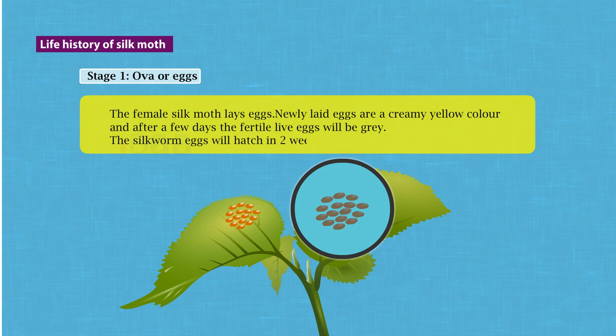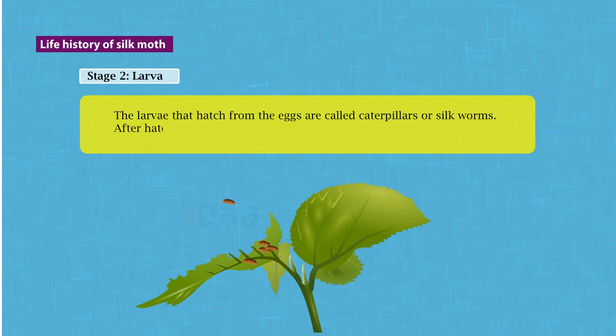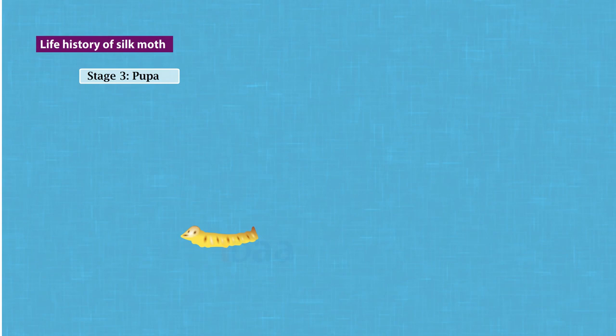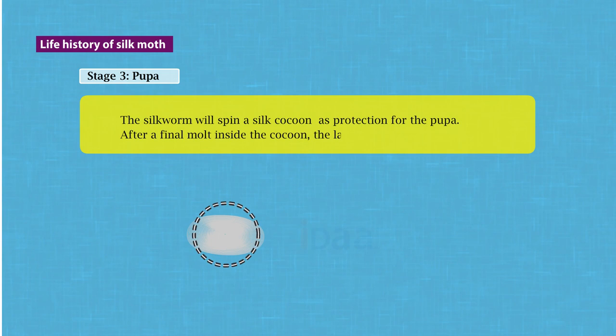Stage 2 — Larva: The larvae that hatch from the eggs are called caterpillars or silkworms. After hatching, the larvae eat the leaves of the mulberry continuously. Stage 3 — Pupa: The silkworm will spin a silk cocoon as protection for the pupa. After a final molt inside the cocoon, the larva changes into the brown pupa.